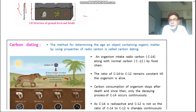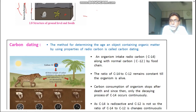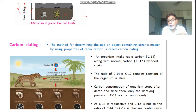Now what is carbon dating? Carbon dating is the method of determining the age of an object containing organic matter by using radiocarbon. It is called carbon dating.